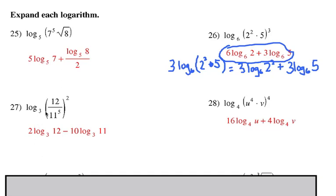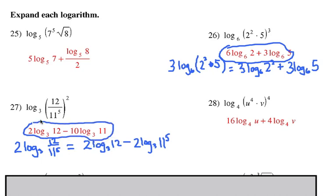Number 27. We have an outside power here, the power of 2, and that can be in front. We can use that power rule, so 2 log 3 of 12 over 11 fifths. Then, because of this quotient here, I can split it up. We have 2 log 3 of the 12 minus 2 log 3 of 11 to the fifth power. Now, that one's going to be okay right there, but this fifth power gets in front there, and now it becomes 10 log 3 of 11. Here's my official answer.